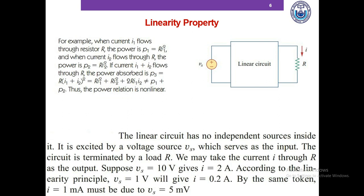Let's say we have a resistor R. When current I1 flows, the power P1 equals I1 squared times R. When the current is I2, the power P2 is I2 squared times R. If current I1 plus I2 flows, the power absorbed is (I1 + I2) squared times R, which is not equal to P1 plus P2. Therefore, this does not obey the additivity property, so we can directly call them non-linear.